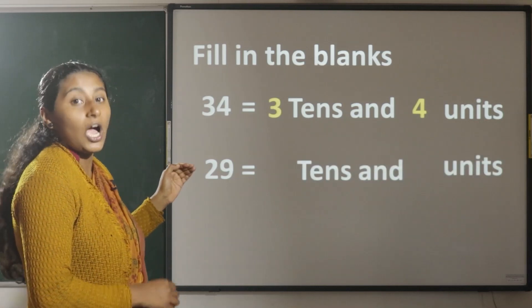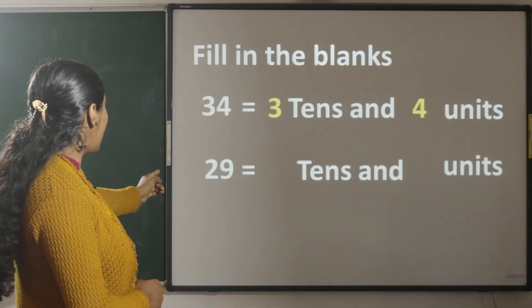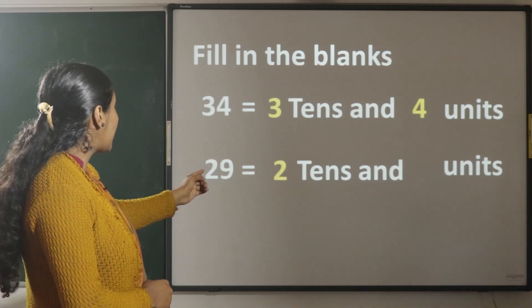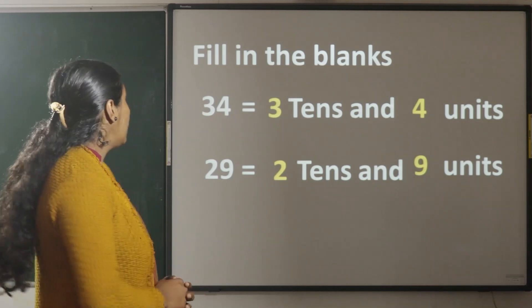In 29, how many tens and how many units are there? In 29, 2 tens and 9 units. Okay, children?